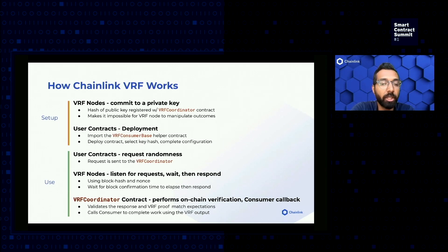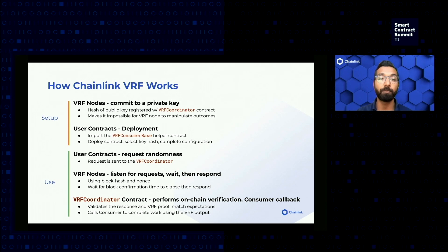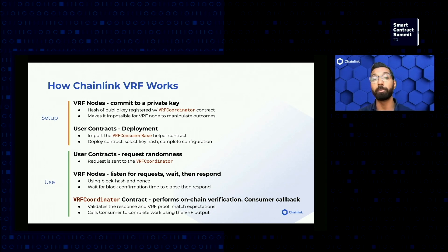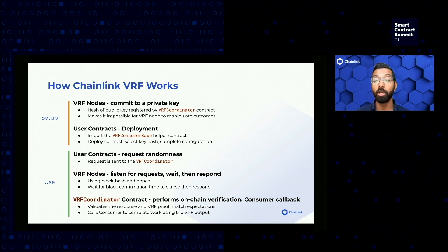Let's dive a little bit into how Chainlink VRF works. Broadly speaking, we have two key stages. The first is setup: VRF nodes start by committing in public to a private key that is used to generate the random numbers. This is done by registering a hash of the public key with the VRF coordinator contract. By committing to this upfront, any error or purposeful manipulation by the VRF node can be detected. Users then select a key hash they would like to get responses from and deploy and configure their contract accordingly. We provide a VRF consumer base helper contract to manage the interactions with the VRF coordinator, so all you need to do is request randomness and implement a fulfill randomness function, which will be called by our VRF coordinator to complete your work.